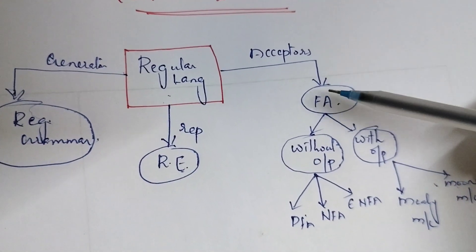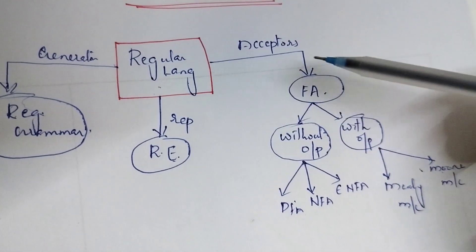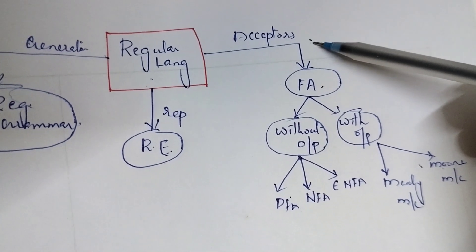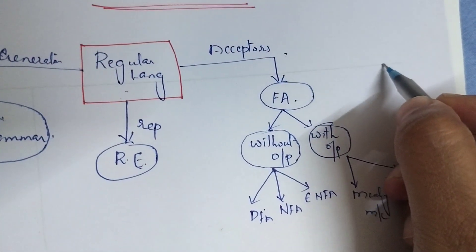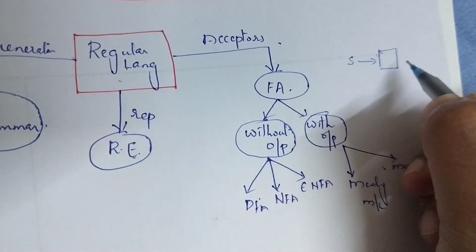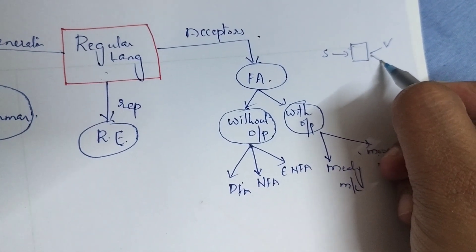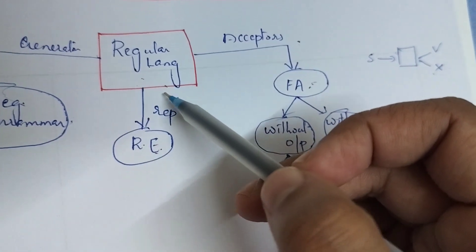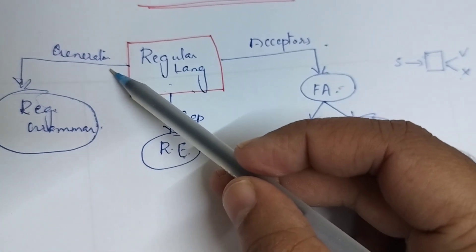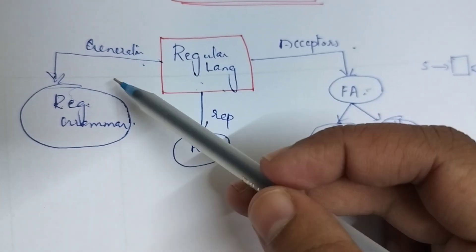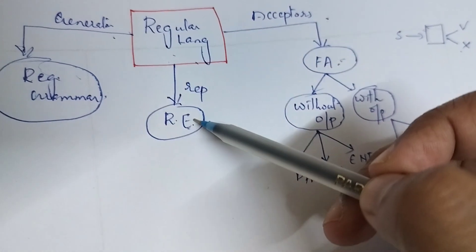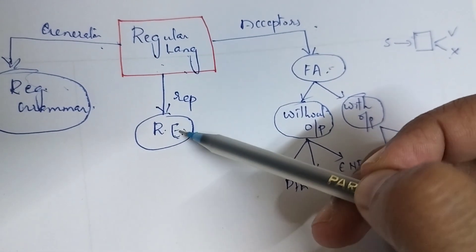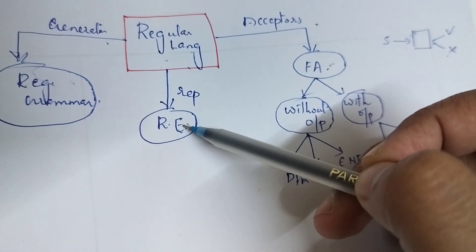Let me explain what an acceptor, generator, and regular expression are. An acceptor is a mathematical representation to which, if we give a string, it will say whether the string is present in the language or not — that is, the string is accepted or rejected. The acceptor is finite automata. A generator, given a language, will generate all the strings in that language. Generators are nothing but grammars. A regular expression is the mathematical representation of a language exactly accepted by finite automata.